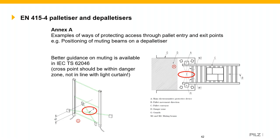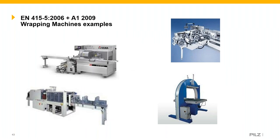For cross-beam muting at the infeed and outfeed where direction of travel is always the same, guidance can be found in EN 62046. The cross point should be in the non-safe zone/danger zone, not in line with the light guard itself.